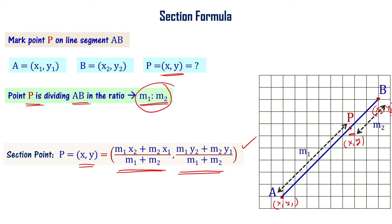The ratio of division is m1 is to m2, and the end points of the line segment are x1 comma y1 and x2 comma y2. The section point x comma y is given as m1 x2 plus m2 x1 divided by m1 plus m2, comma m1 y2 plus m2 y1 divided by m1 plus m2.